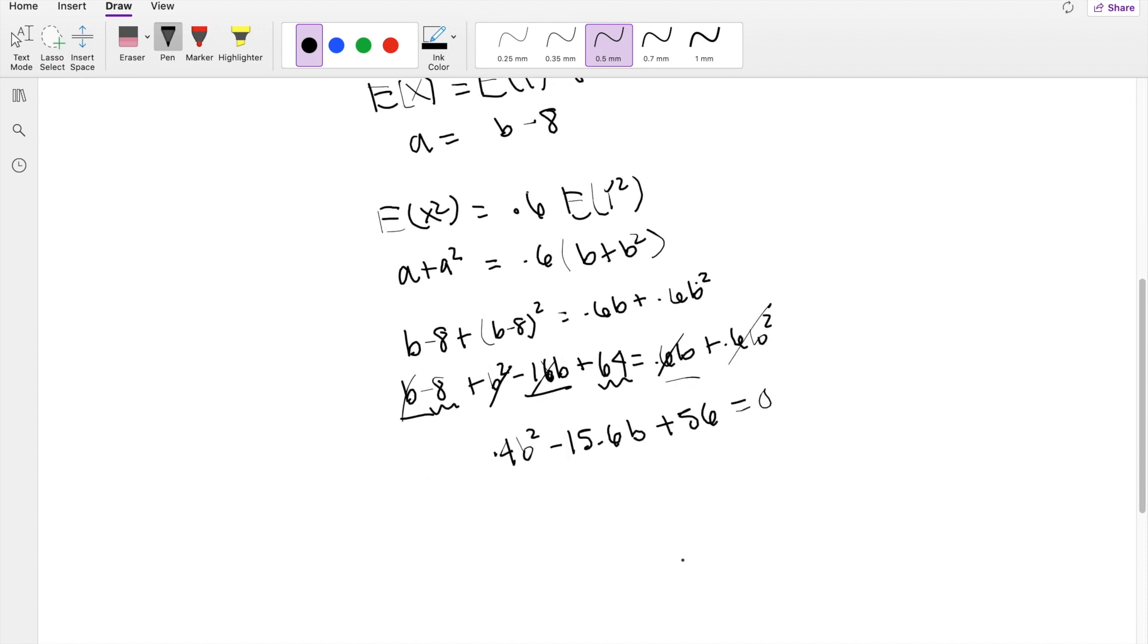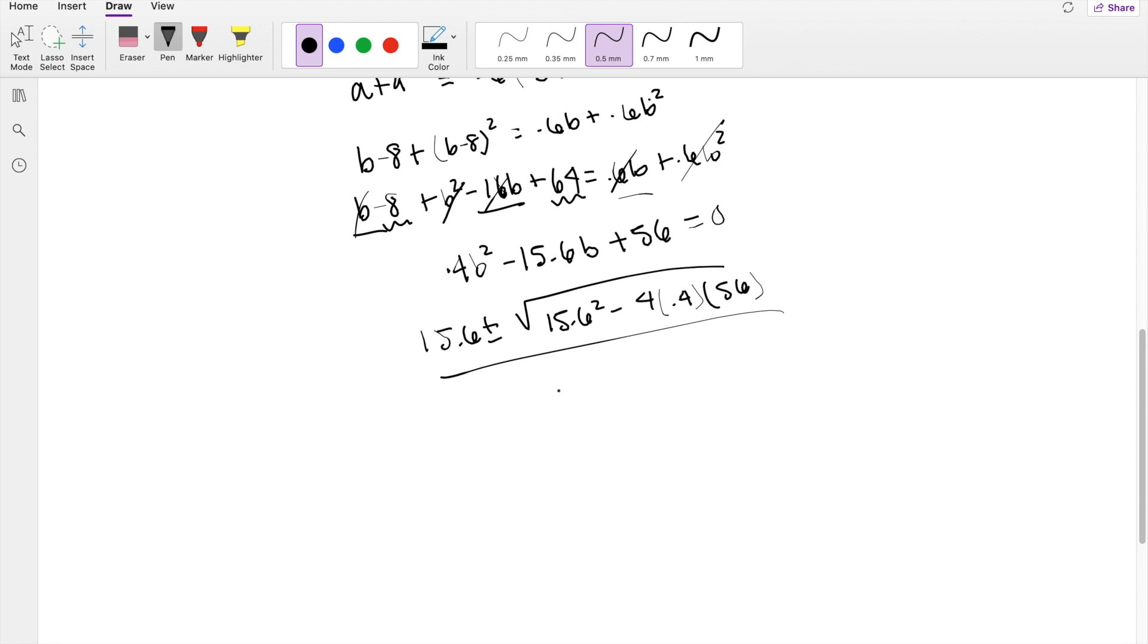Cool, cool, cool. So now we just have to do a quadratic formula, negative b, so that's 15.6 plus or minus square root of b squared, 15.6 squared, minus 4 times a, which is 0.4, times c, which is 56. Divide by 2a, which is 0.4. So then you get two answers here, 35 and 4.